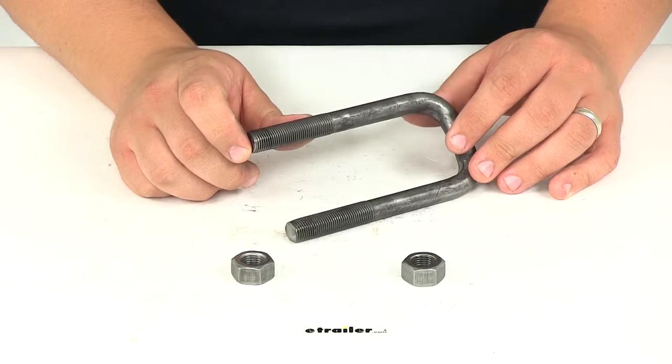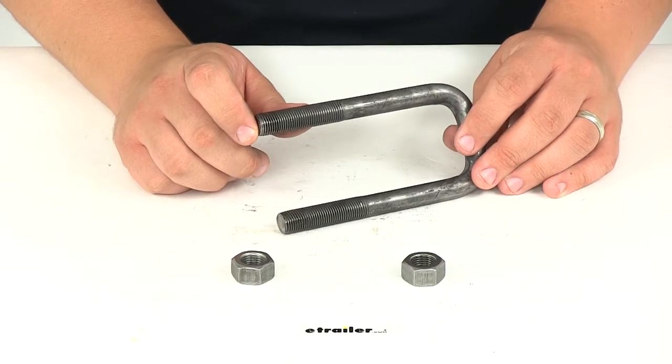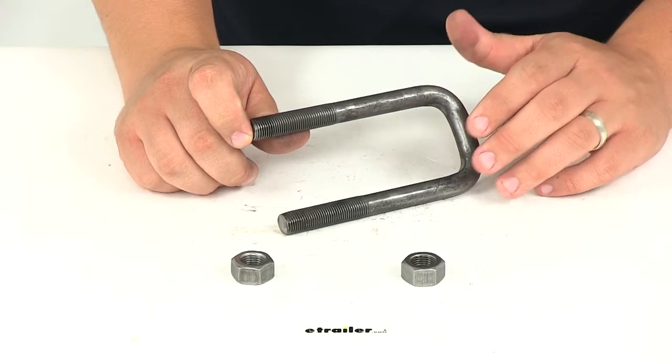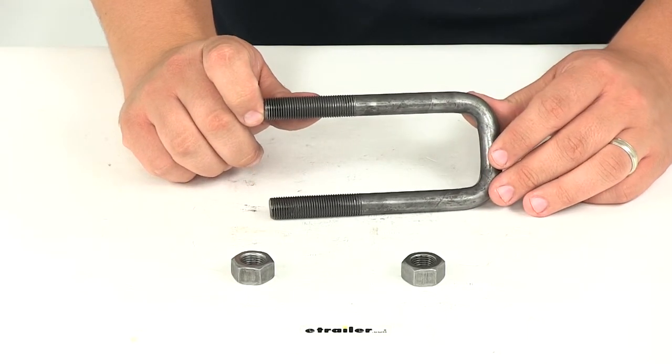This is used with U-bolt plates to secure the axle to the leaf springs which are mounted to the trailer frame. It's going to attach with the U-bolt plate which is sold separately and an additional U-bolt with the same dimensions which is also sold separately.